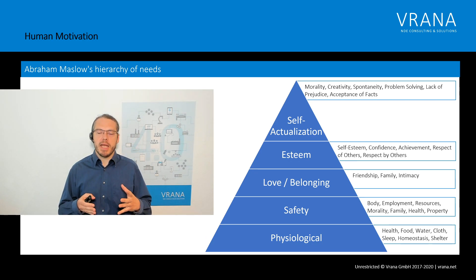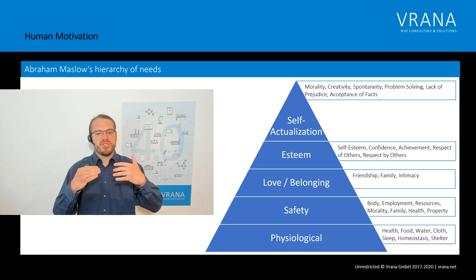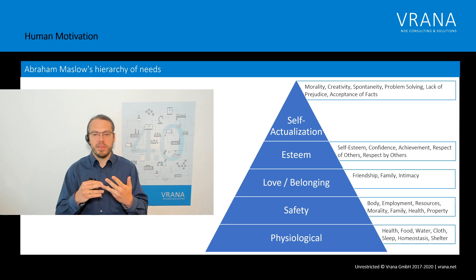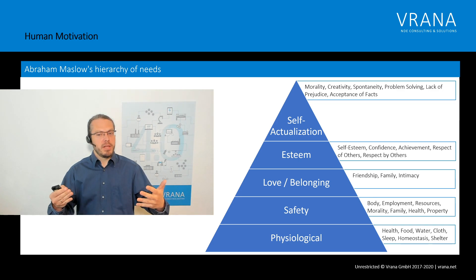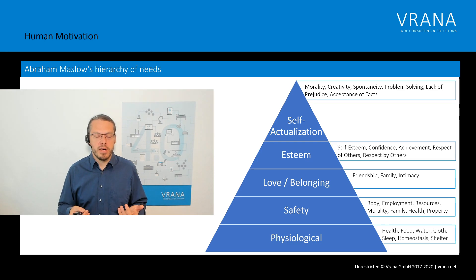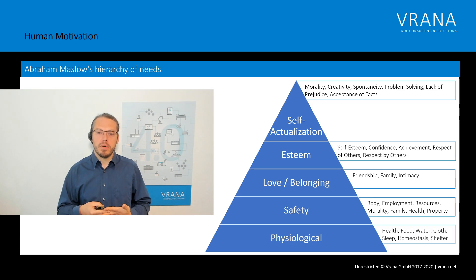Looking into this model, we can see that human needs start with psychological needs: health, food, water, clothes, sleep, shelter — the very basics. On top of that we have safety: safety for the body, employment, resources, family, health, and property. On top of that, love and belonging: friendships, family, intimacy. Then esteem: self-esteem, confidence, achievements — the ego stuff. And all the way on top, self-actualization: morality, creativity, problem solving. Once all of that is fulfilled, a human is quite happy.